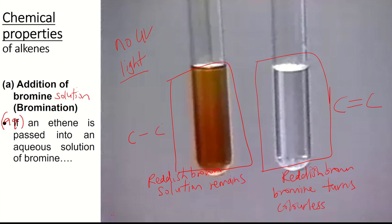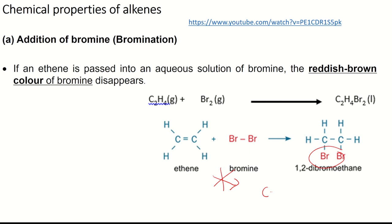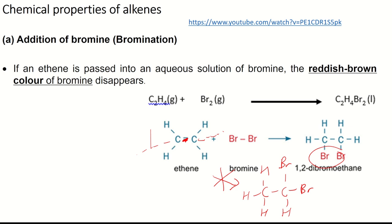No high temperature or catalyst is needed for bromination — it reacts readily. The double bond is broken and one bromine atom is added to each carbon; they must be on adjacent carbons. Two bromine atoms on the same carbon will never happen. This bromine water test is a very simple and convenient test to distinguish between alkane and alkene. Must use aqueous bromine solution — bromine solution.